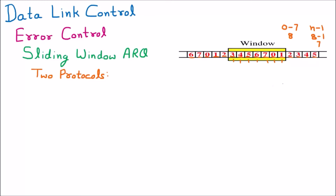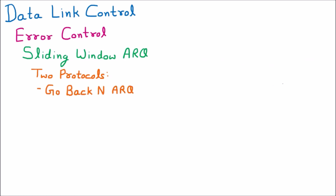We are discussing the two protocols under sliding window ARQ. The first protocol is Go Back N ARQ, and the second is Selective Reject ARQ. In Go Back N, whenever we go back to the N packets and retransmit those packets, that is called Go Back N. In Selective Reject, if we are selectively rejecting some packets, that is called Selective Reject ARQ.